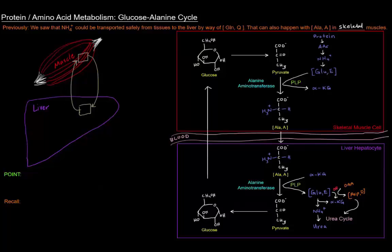So we'll start off in a skeletal muscle cell, make our way through the blood and eventually to the liver. Let's start here in the skeletal muscle cell with glucose. In the skeletal muscle cell we're going to be talking about taking glucose and metabolizing it to pyruvate via glycolysis.